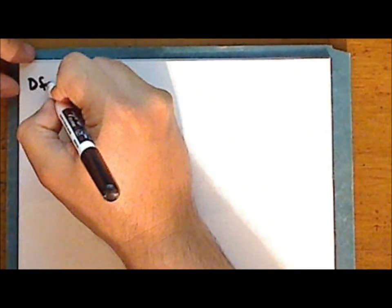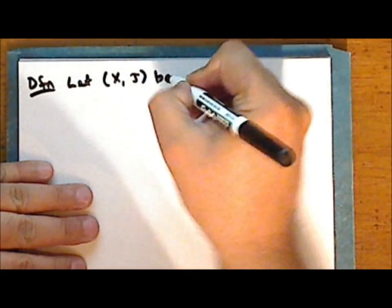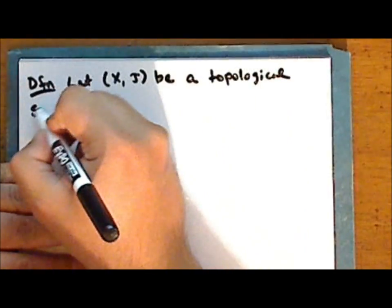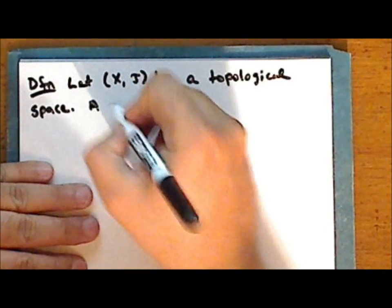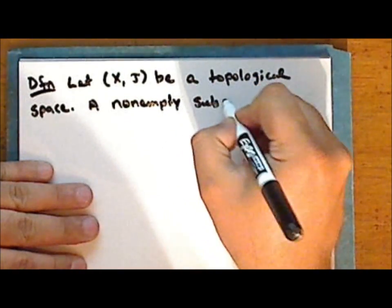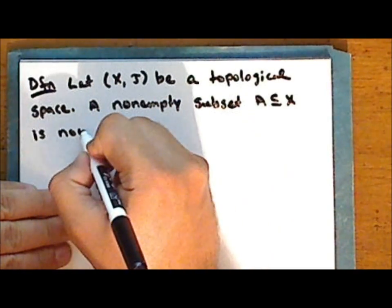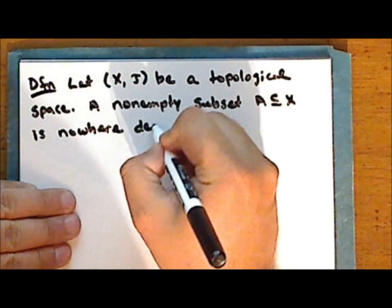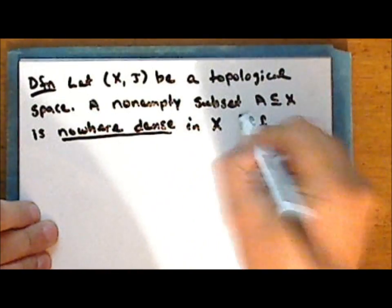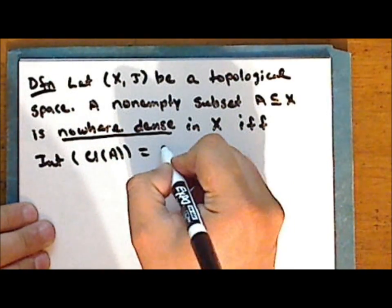Alright, new definition. Let the set X together with some topology tau be a topological space. A non-empty subset A of the space X is nowhere dense in the space X if and only if the interior of the closure of A is the empty set.